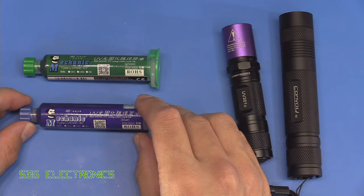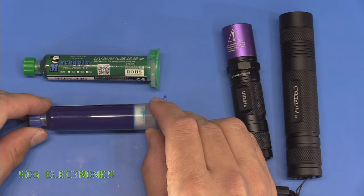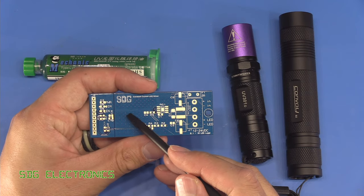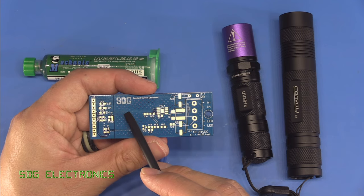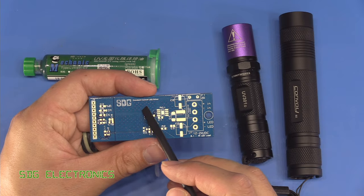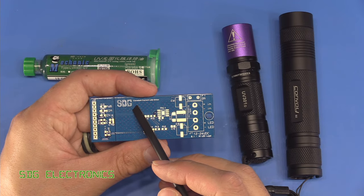So what these are is an ultraviolet curable liquid. Let's say you've made a mistake on your PCB and you need to scrape away some of the solder mask to make a repair underneath. After you've made that repair you might want to replace the protection that's afforded by the solder mask on your board.